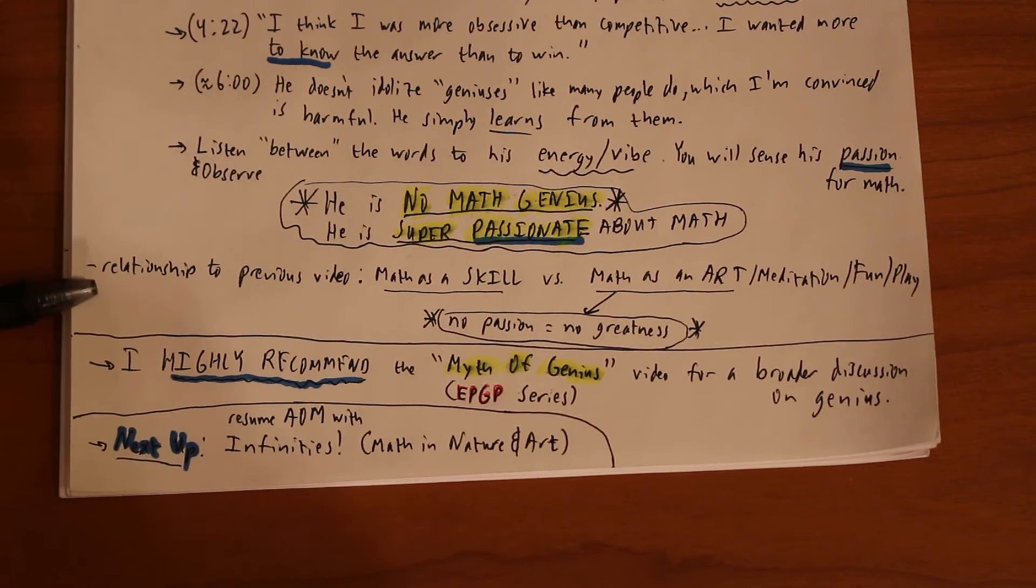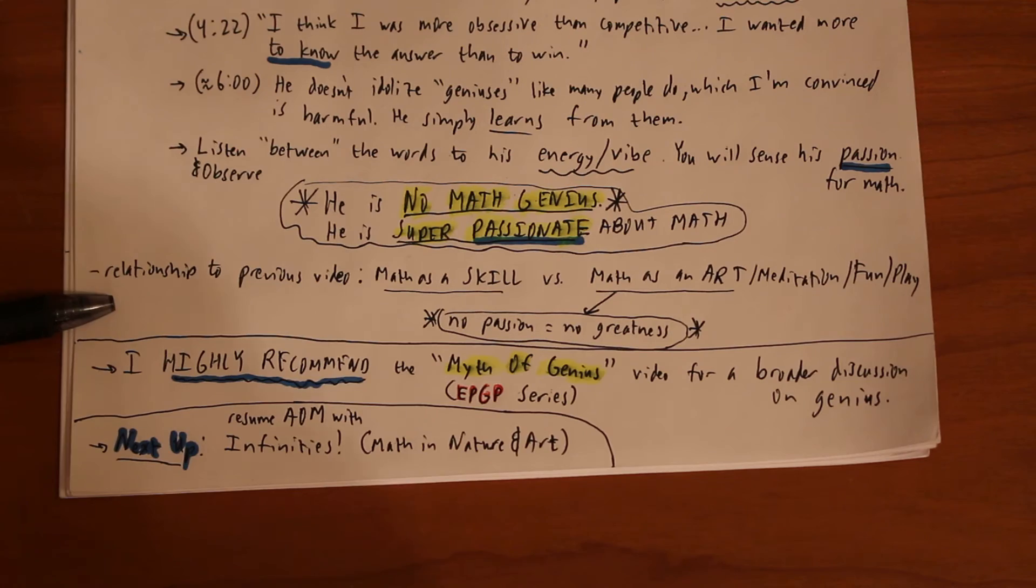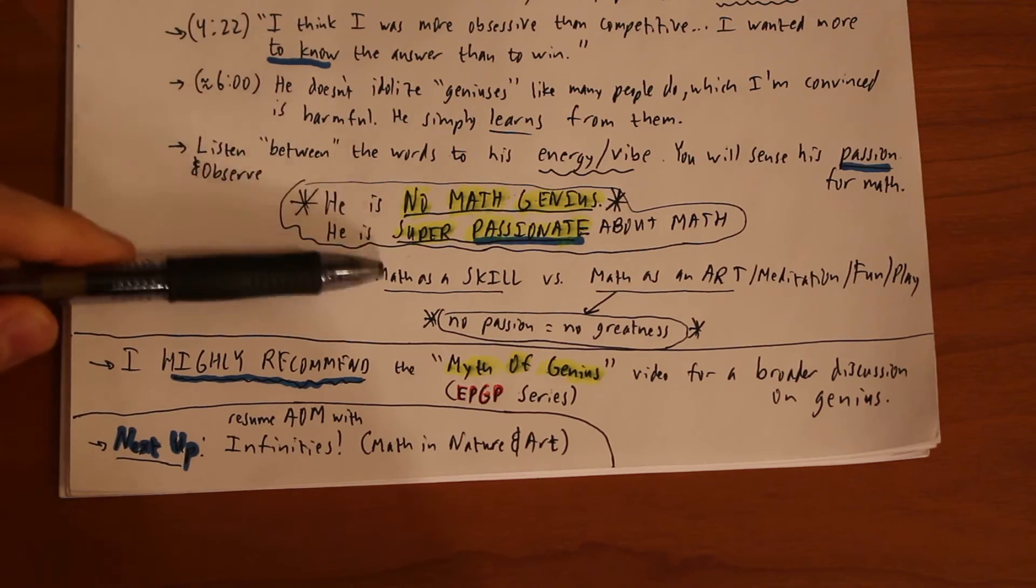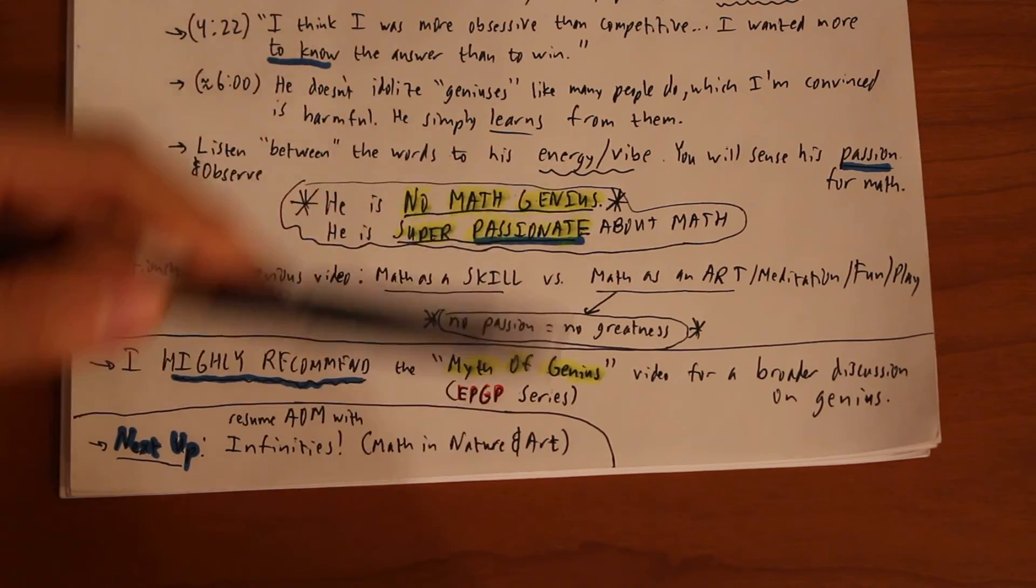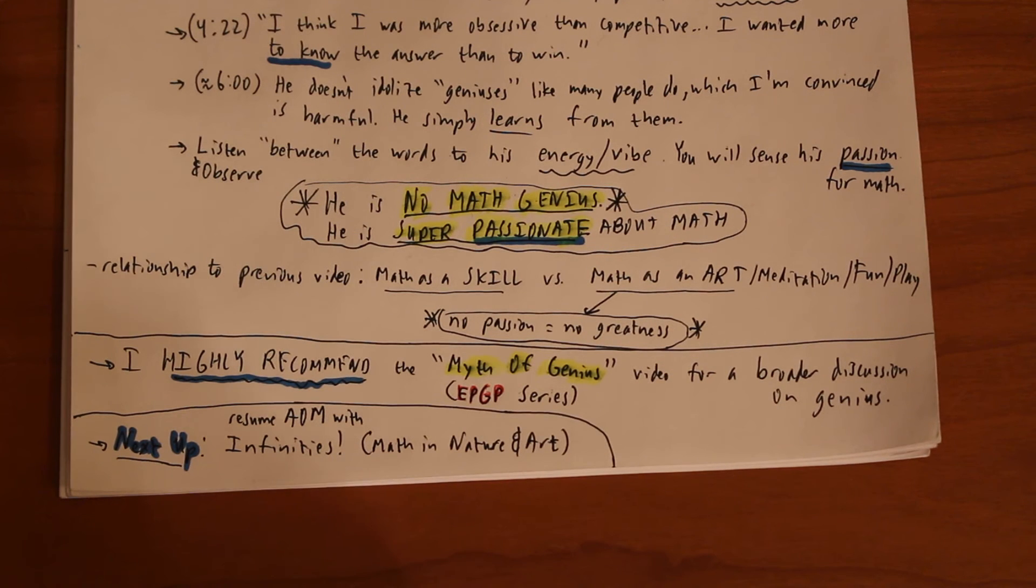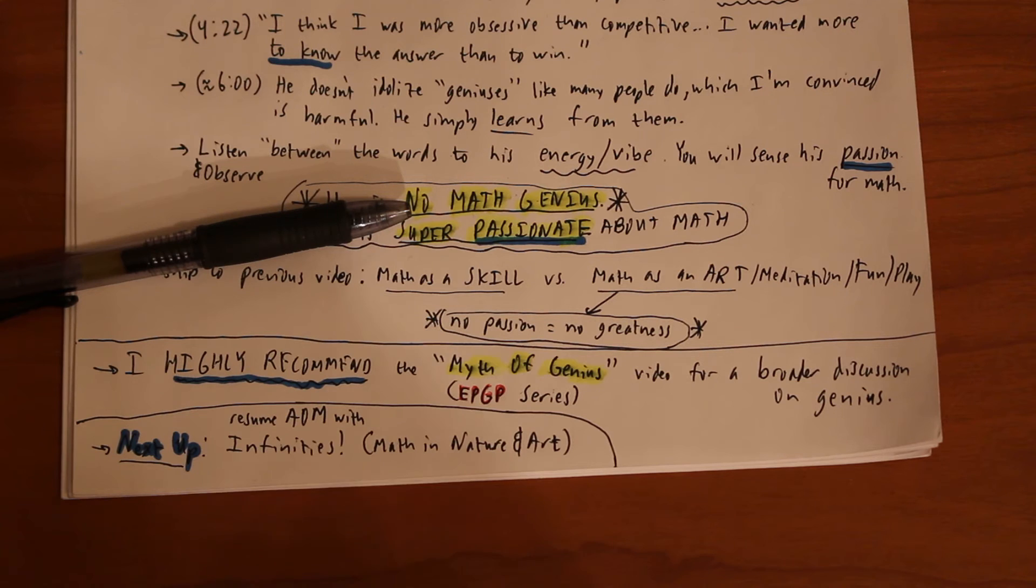That's kind of the gist of what I wanted to mention in this video, but I also want to relate it to the previous video in this series which was on math as a skill versus math as an art: meditation, fun, play. On the 'he's not a math genius point,' what makes Terence Tao so special is that he has nurtured such a great love for the subject of math.